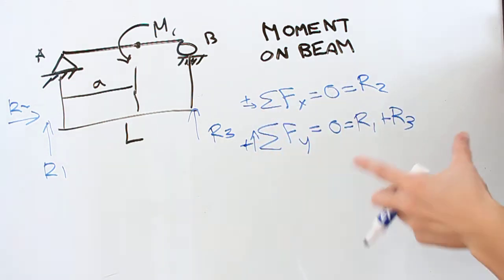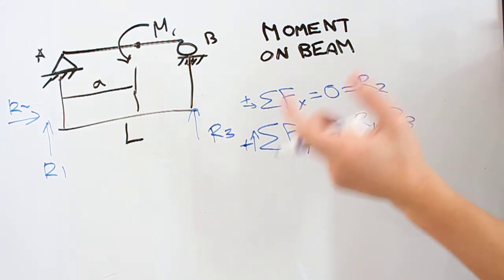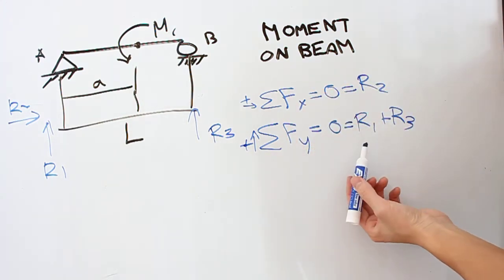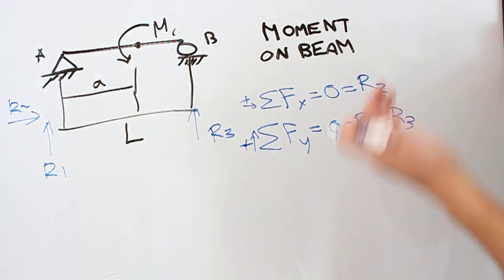Instantly, you should be going, whoa, there's something weird here. Two positive values equal 0. So to resolve this, you have to accept at this point that, OK, something's different from the last problem. One of these is negative at this point.